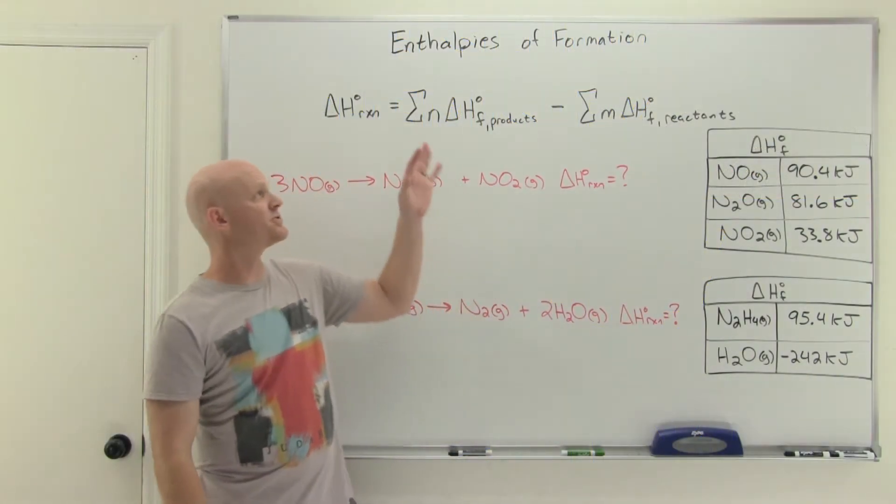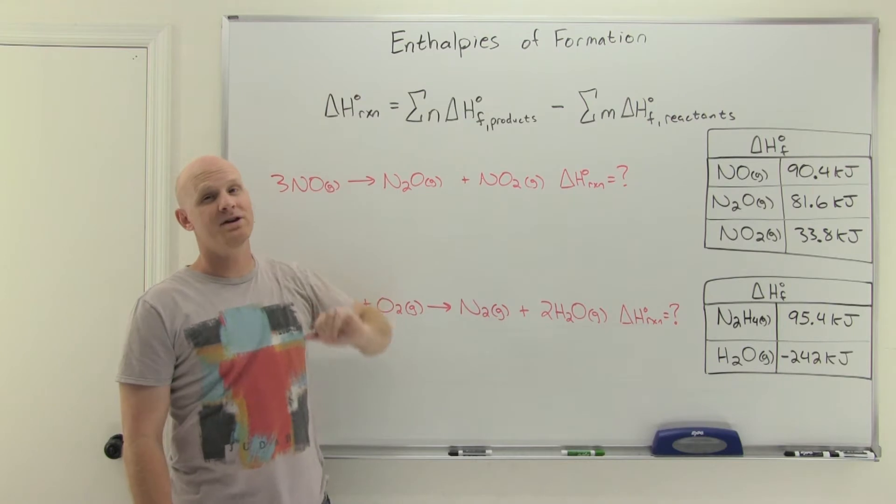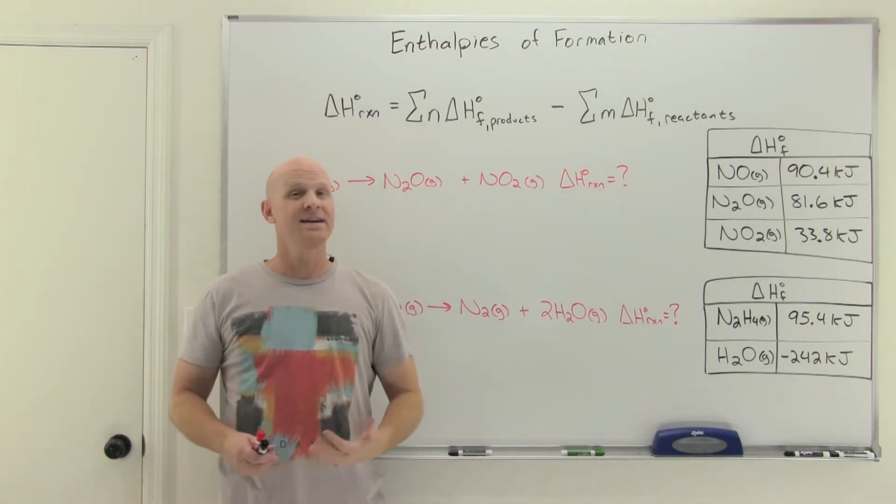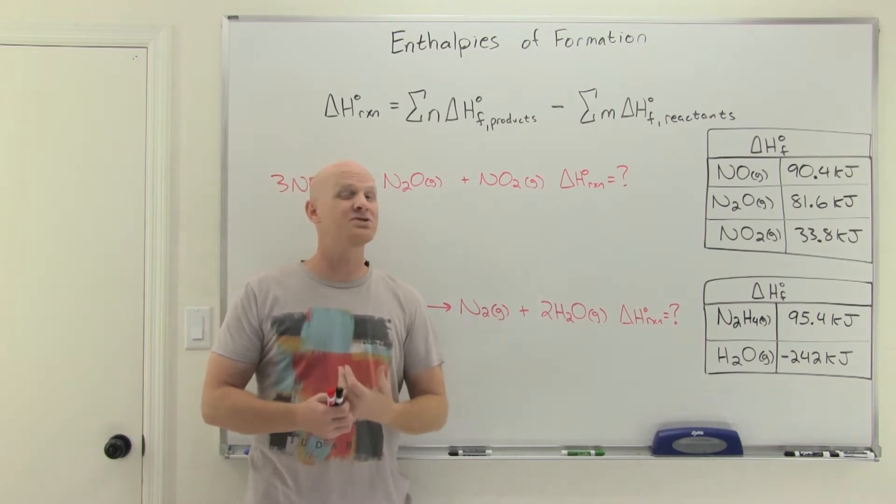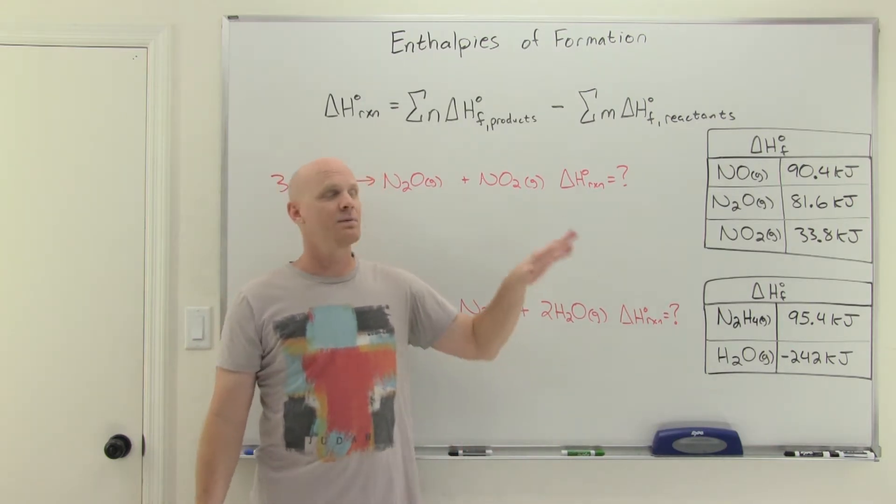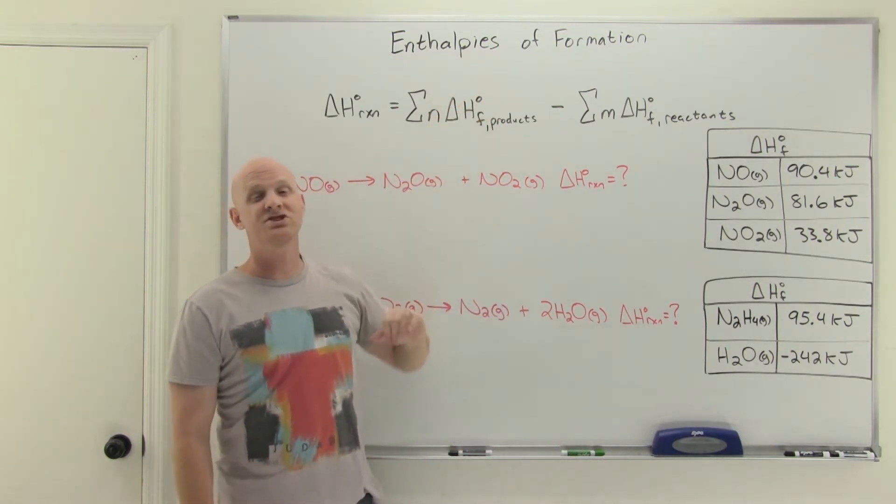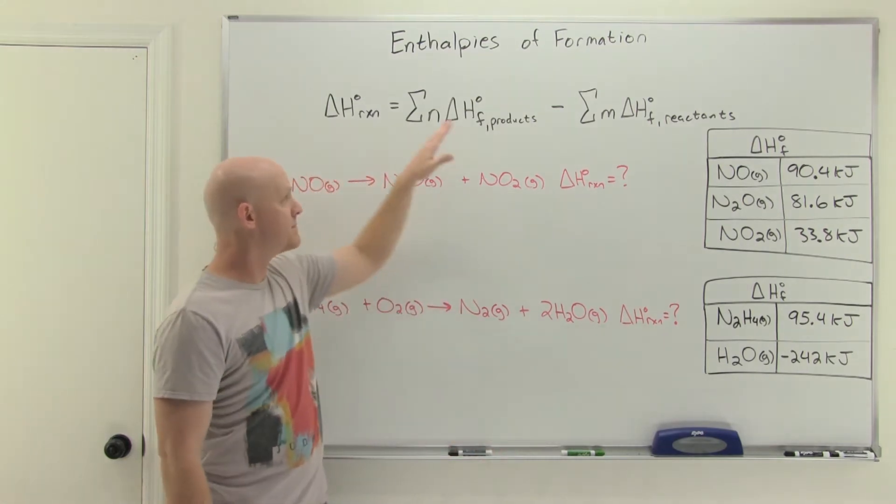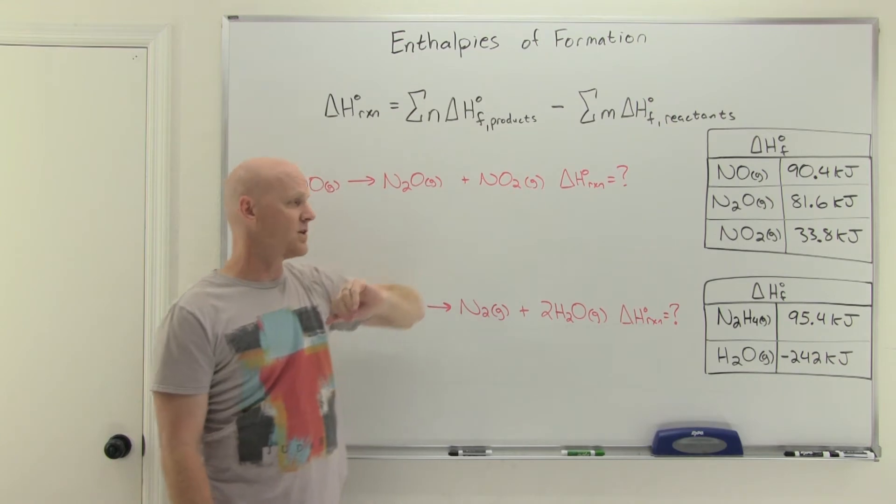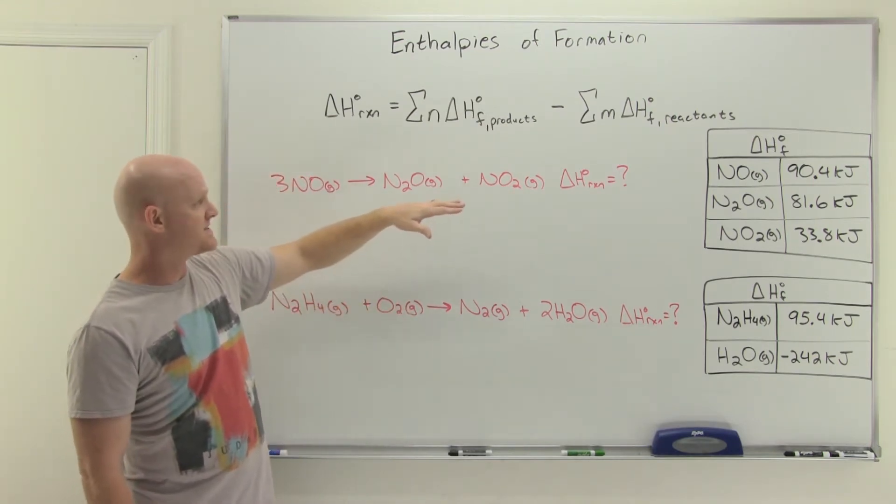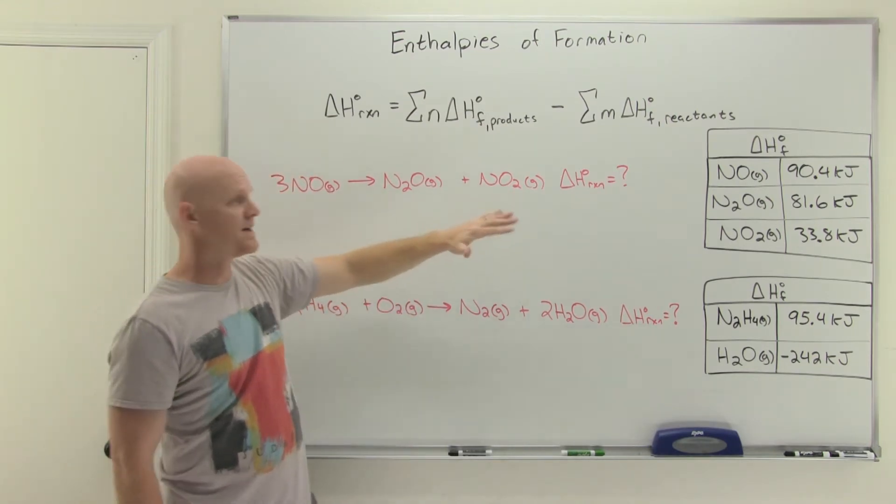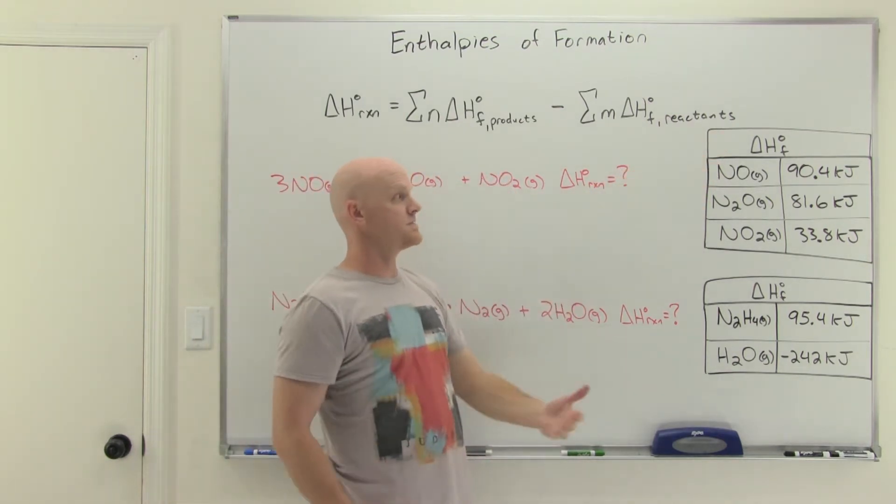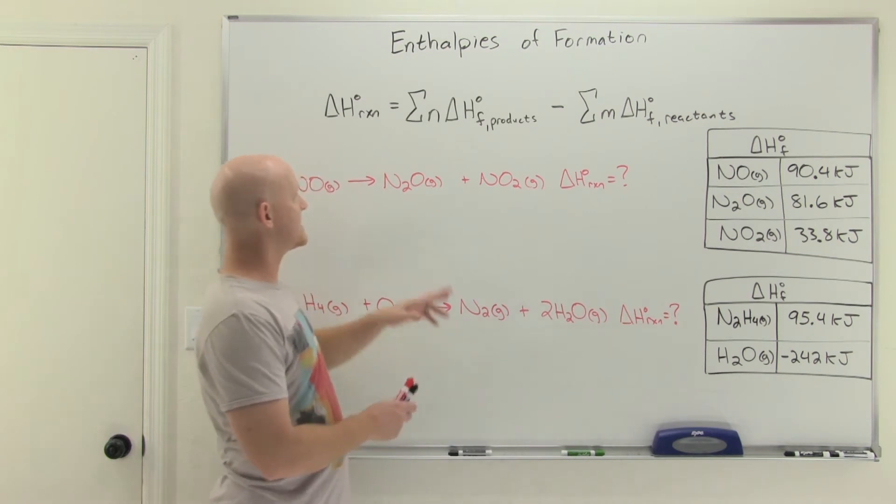Using enthalpies of formation to calculate delta H is way easier than Hess's law. Technically, it is an application of Hess's law, but you're never going to realize that it is. Somebody defined these enthalpies of formation in such a way that it really just turned into a plug-and-chug scenario, products minus reactants. In this case, we'll see how easy this is. Here we've got this lovely reaction, and I've provided you with the delta H information for all the reactants and products, and we're simply going to do products minus reactants.